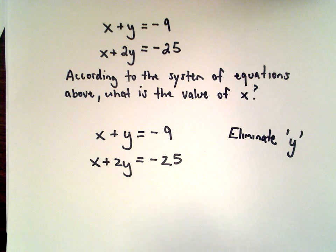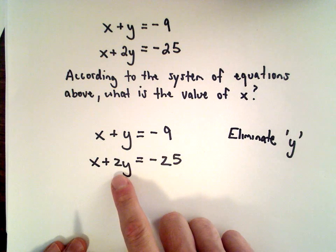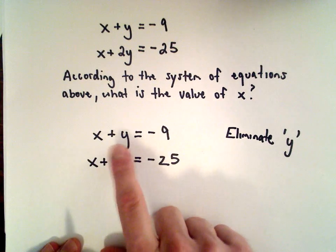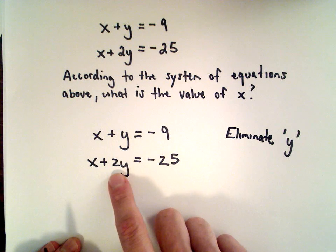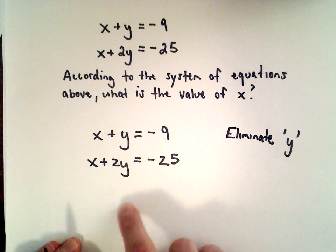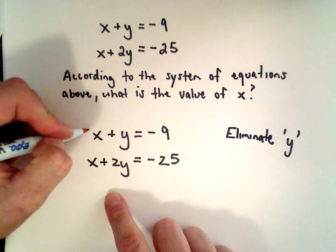So I want to do elimination by addition. I notice I have a positive y and a positive 2y, and I think, well, if I had a negative 2y here, if I add negative 2y and positive 2y, I would be left with 0y.